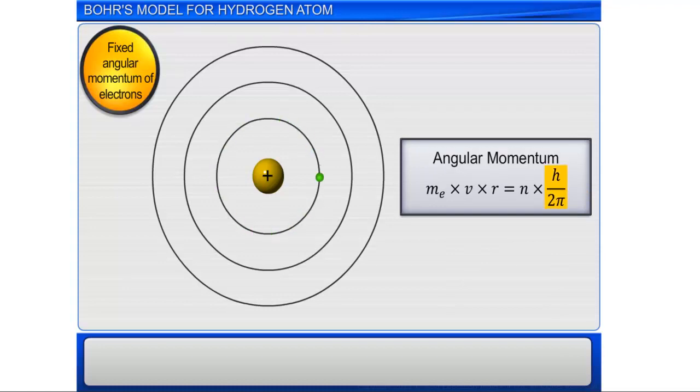Where N is an integer that has the values 1, 2, 3, and so on, and H is the Planck's constant.